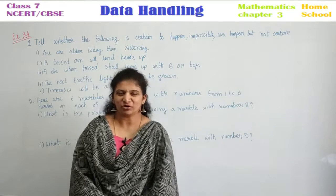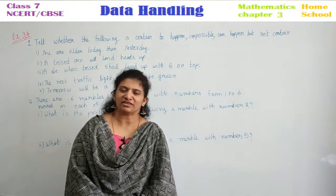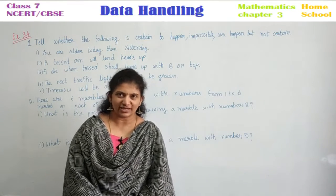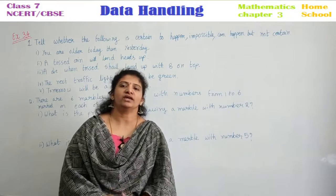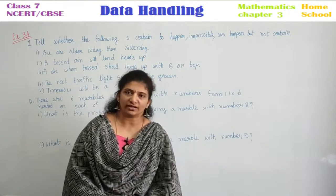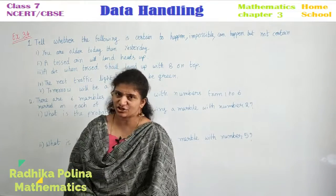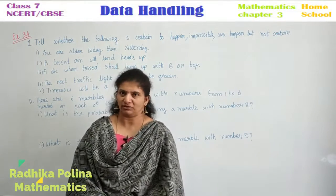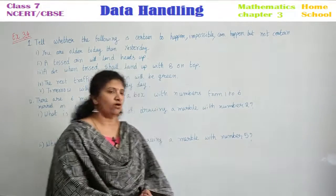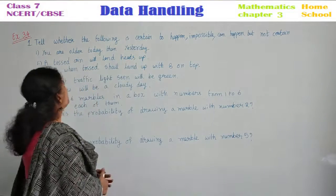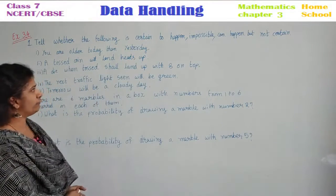Hi, hello! Welcome to Home School. This year, Class 7 Mathematics, NCRT or CBSC board. We are in Chapter 3, Data Handling, and this is your last session of this chapter — Exercise 3.4, first problem. Tell whether the following is certain to happen, impossible, or can happen but not certain.